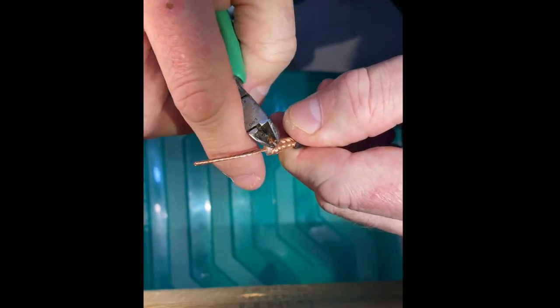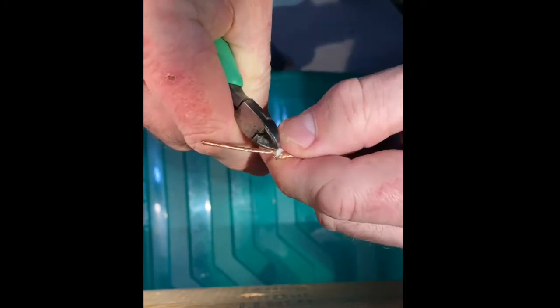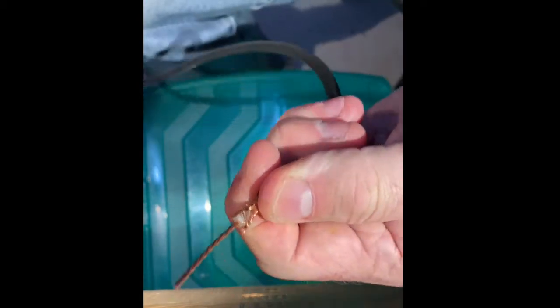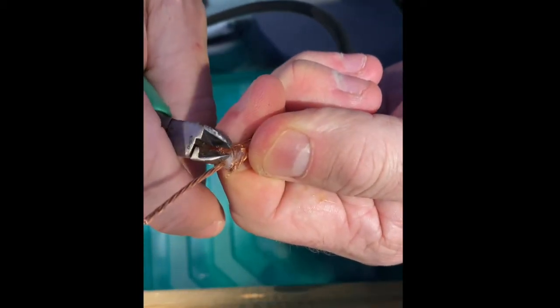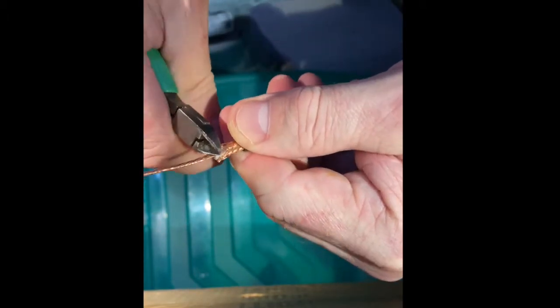So grab the diagonal cutters and trim the braid back about a 20th of an inch or so. It could be more. We're going to find out later that it could be a bit more. But just trim it back so it can't go beyond the white center insulator and touch the bad part of the connector. That should probably do it. I think it did a pretty good job.